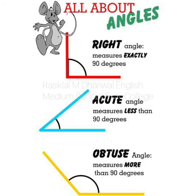Second one is acute angle. Acute angle measures less than 90 degrees — joh blue mein hai, that is acute angle. Joh right angle se kam hota hai, so it is acute angle. And the third angle is obtuse angle. Obtuse angle measures more than 90 degrees.